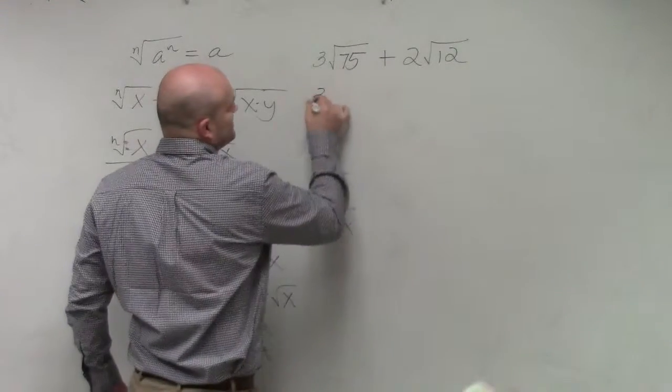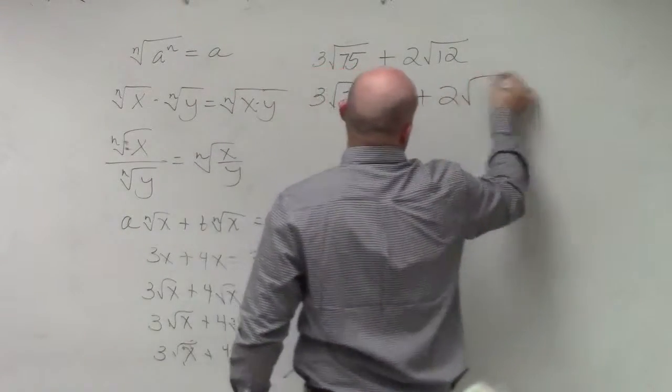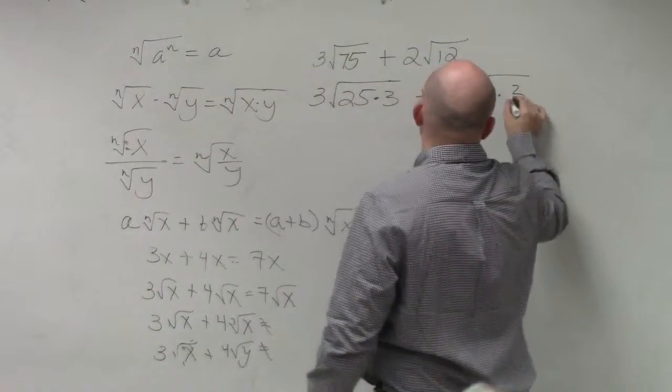So I can rewrite this as 3 times the square root of 25 times 3, plus 2 times the square root of 4 times 3.